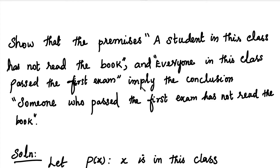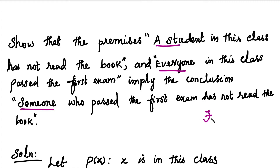In this question, we have the terms: student, everyone, someone. We can use quantifiers to solve this. For 'everyone' or 'for all', we use the universal quantifier. We can use symbolic representation in this question.